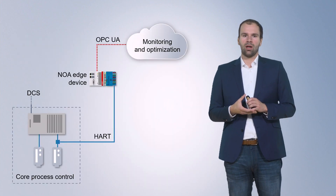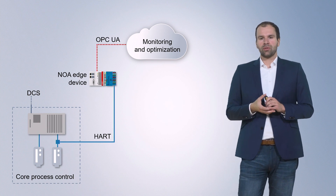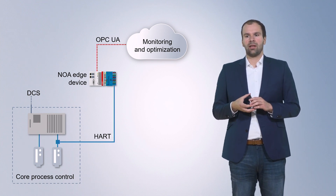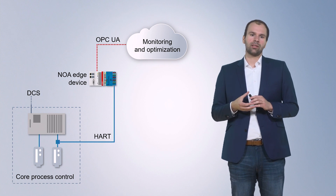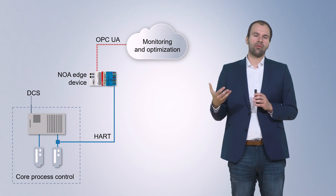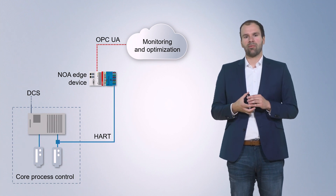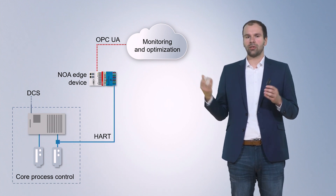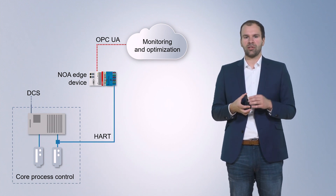This data is then converted inside the edge device, and provided through a standardized OPC UA server to higher-level systems. In our case, we use a standard embedded PC with attached IO EtherCAT cards that connect to the field devices and read the data from the devices. Then we map it to a NOA information model, and provide all the information through the OPC UA server to higher-level systems for monitoring or optimization tasks.